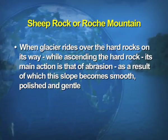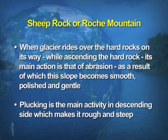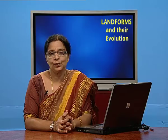The next feature is sheep rock. This feature is named because it resembles a sheep from the top, with wool on its back. When the glacier rides over hard rocks while ascending, its main action is abrasion, making the slope smooth, polished, and gentle. On the other hand, plucking is the main activity when the glacier descends down the other side, giving it a rough and steep-sided shape known as a sheep rock.